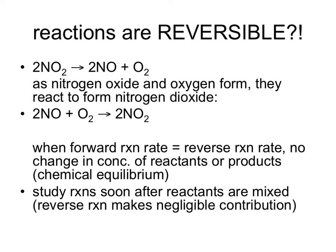Before we get into the details of rate laws and how we establish the various components, I first want to discuss the reversibility of reactions. Looking at this reaction example, we have NO2 decomposing into NO and O2 — this is our forward reaction, basically our reactants going to products. However, the reality of reactions is that there are actually two processes occurring at the same time: the forward decomposition reaction and the reverse reaction, both occurring simultaneously.